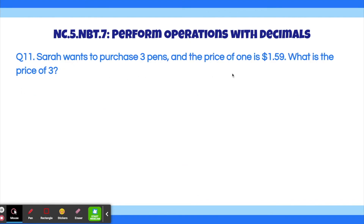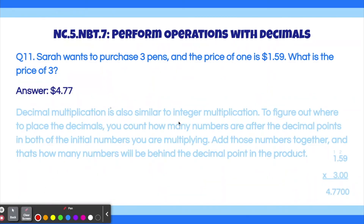Question 11. Sarah wants to purchase 3 pens and the price of 1 pen is $1.59. What is the price of 3 pens? The answer is $4.77. Decimal multiplication is similar to integer multiplication. To place the decimal point, count how many digits are after the decimal in each number being multiplied. Here, 1.59 has 2 decimal digits and 3 has 0, so the final answer has 2 decimal places. Multiplying 1.59 times 3 gives 47700; placing the decimal 2 places back gives $4.77.